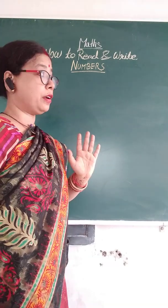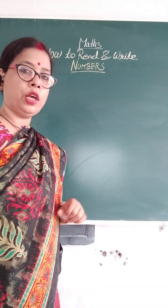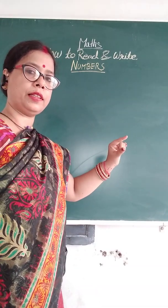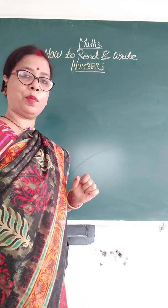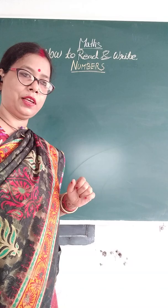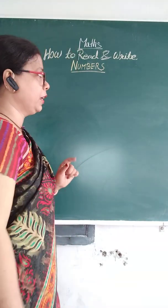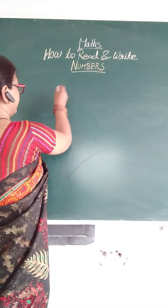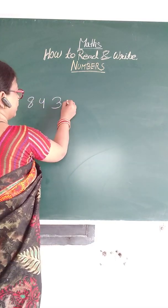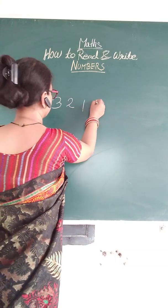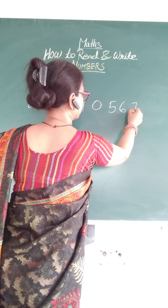But how can we read and write? How many lakh, ten thousand, hundred? So, for example, take the number: 8, 4, 3, 2, 1, 0, 5, 6, 7.